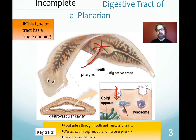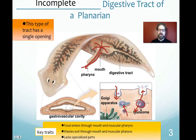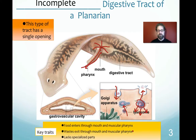When food comes in, the lysosome merges with the food vacuole, breaks it down, and any unneeded waste particles leave again back out through the mouth and pharynx. Any needed nutrients are utilized by the cells around that food vacuole. Key traits of incomplete digestive tracts: food and waste both enter and exit through the mouth and muscular pharynx, and it lacks any specialized parts.